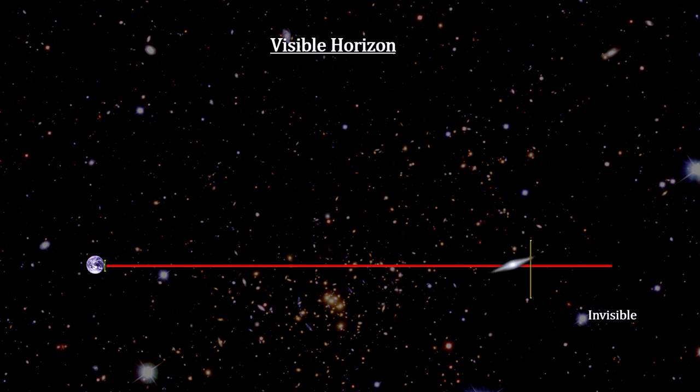It would be beyond the physical visible horizon for the universe. It's not that it is moving through space that fast. It's just that more space is being created per second between us and them than light can traverse in one second.